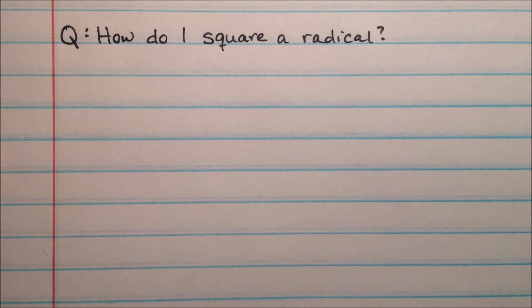Oftentimes, when using the Pythagorean Theorem, we have square roots that are included in the side lengths of a right triangle. When this is the case, we end up squaring expressions that contain whole number parts and radical parts. In this video, I'm going to show you the easiest way to square an expression that includes a radical.